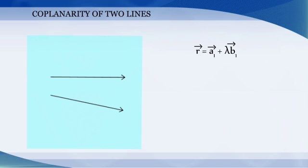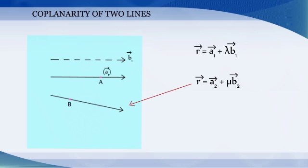Let r vector equal a1 vector plus lambda b1 vector be an equation of a line passing through the point whose position vector is a1 and parallel to the vector b1. Similarly, r vector equals a2 plus mu b2 is the equation of a line passing through the point whose position vector is a2 and parallel to the vector b2.